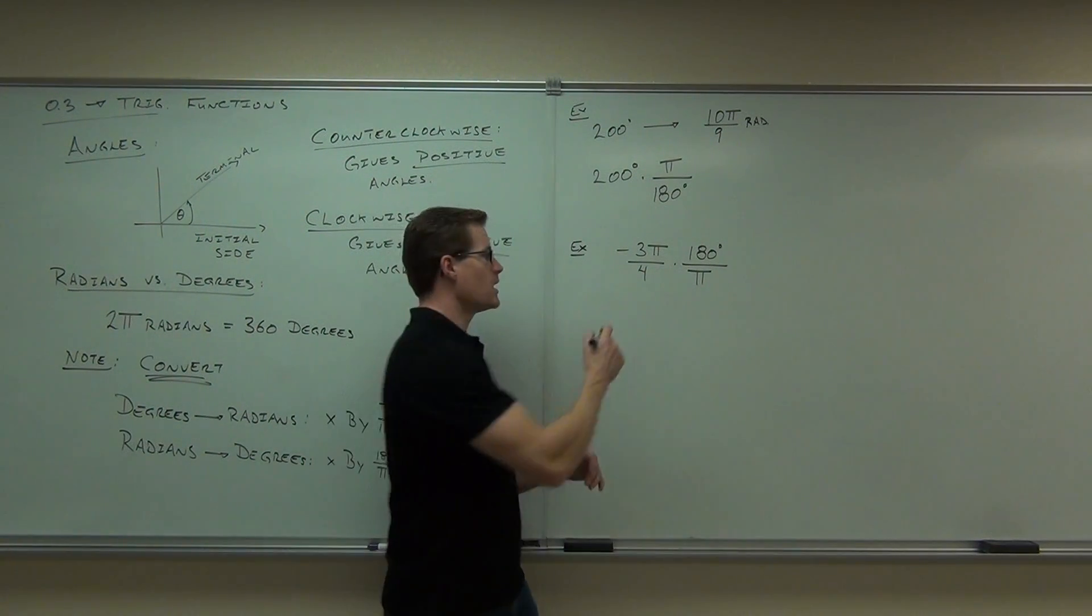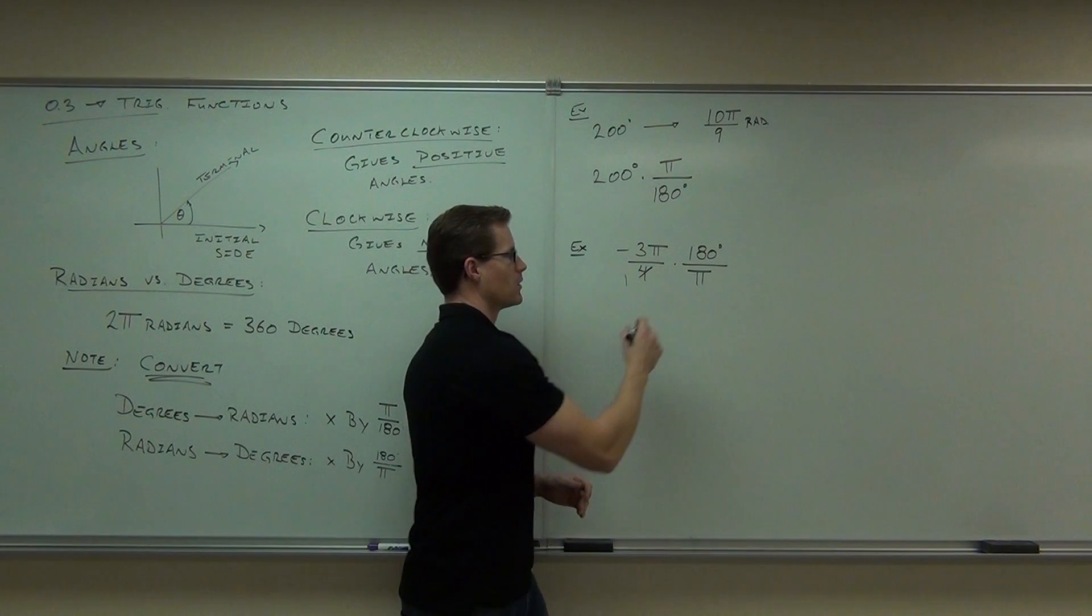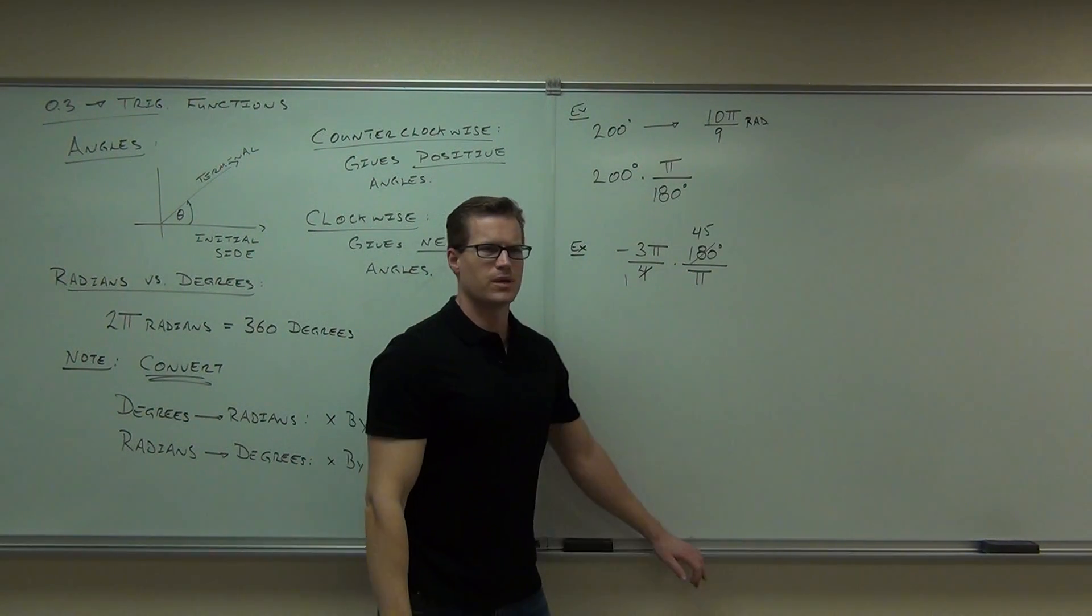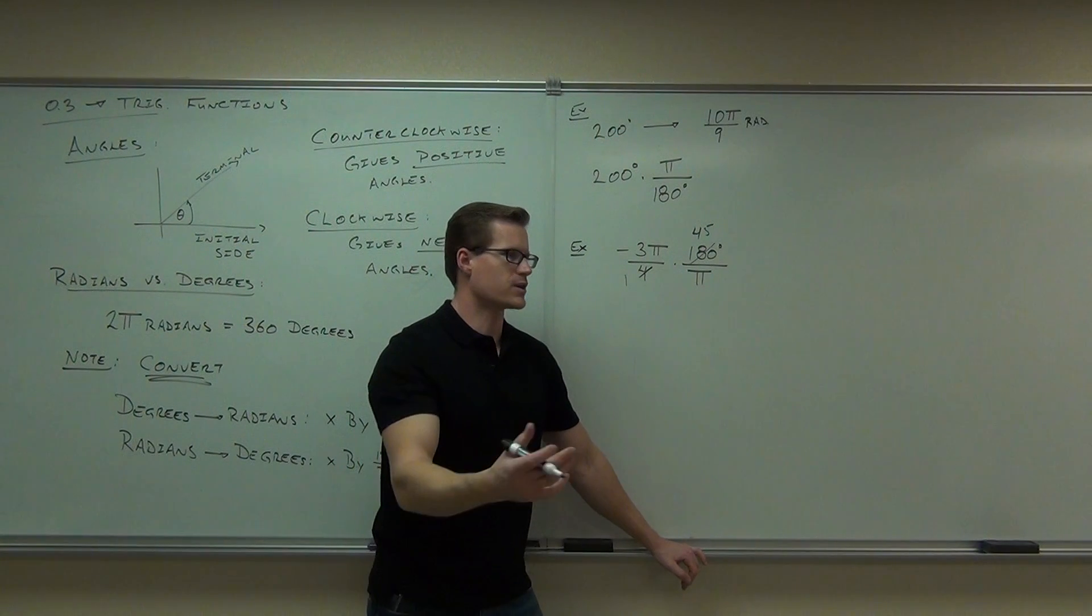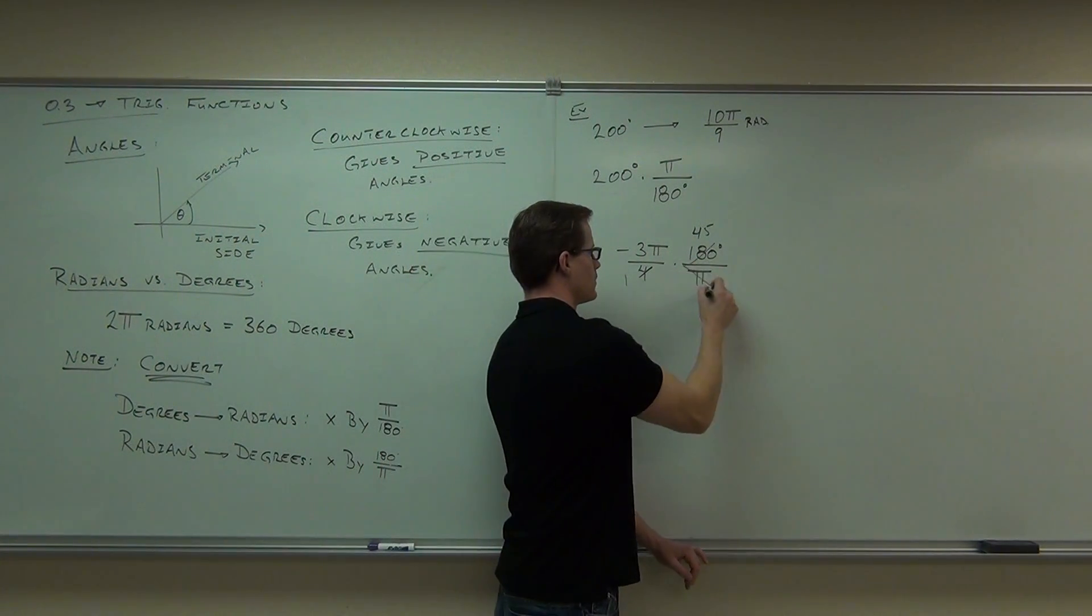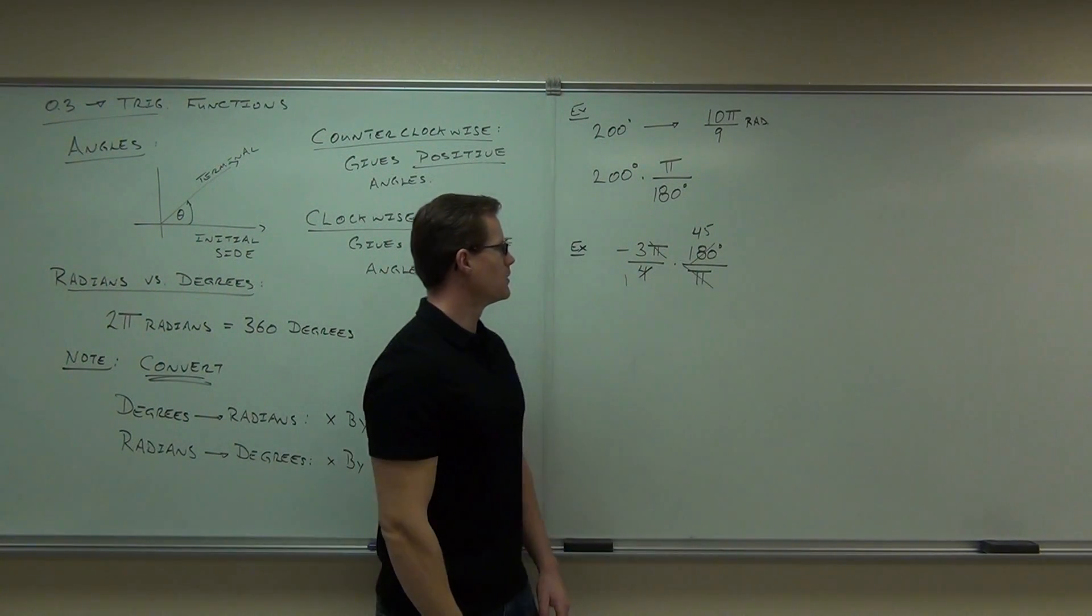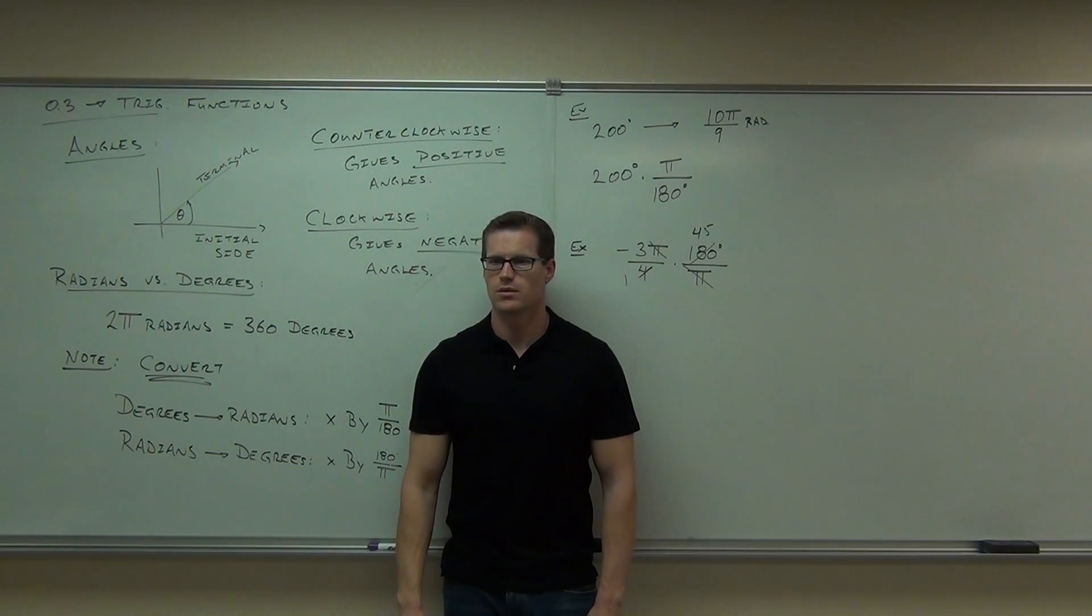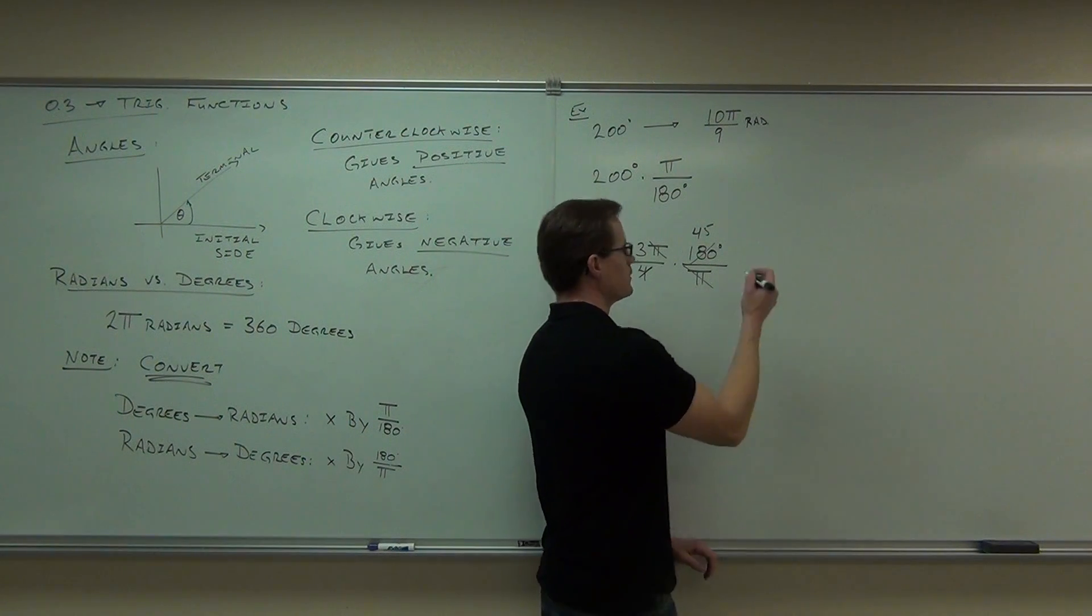Does anything simplify out of this? Sure, 4 goes into 180, how many times? 45. And what, anything else? Pi. The pi's are gone, that's great. Can you do the math, tell me what we're going to get? How many degrees? Negative 135 degrees.